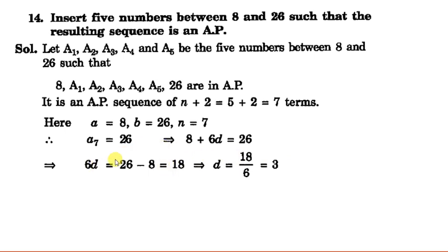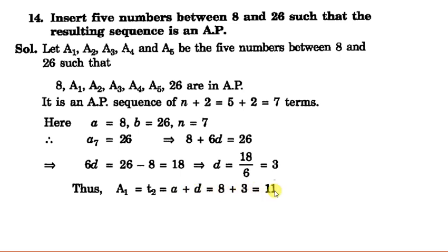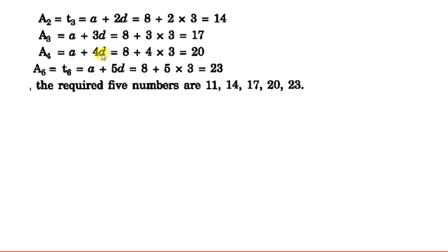You can directly find d using b minus a upon n plus 1: (26 minus 8) divided by (5 plus 1) equals 6 — giving the same result. So d is 3. Now A1 equals a plus d, which is 8 plus 3 equals 11. A2 is the third term, so it equals 14. Likewise up to A5, which is a plus 5d, giving 23. The 5 numbers inserted are 11, 14, 17, 20, and 23.